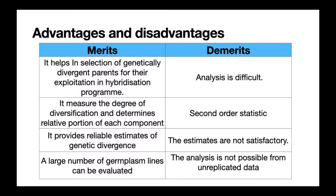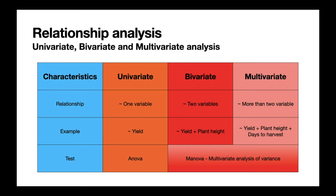A large number of germplasm lines can be evaluated through this method. Its demerits include being unusually difficult, being a second-order statistic, giving unsatisfactory estimates, and the analysis is not possible from unreplicated data. If you don't have replications, a previously uploaded video on hierarchical clustering on this channel will work for you. Before coding, we need to understand univariate, bivariate, and multivariate relationships.